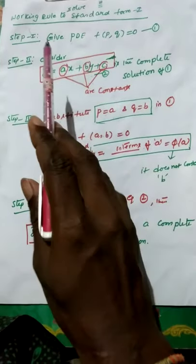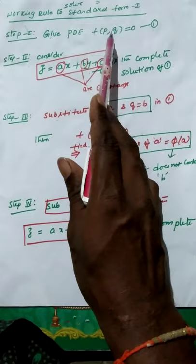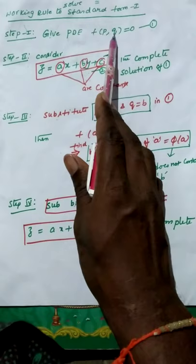In this video we will discuss the working rule to solve the standard form one. In the first step we consider the given PDE f(p,q) = 0 as equation one. That means it contains p and q but does not contain x, y, z.